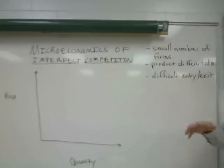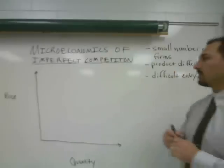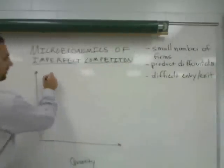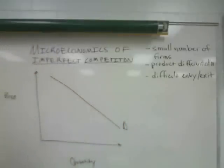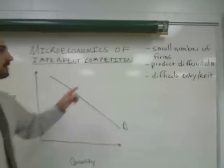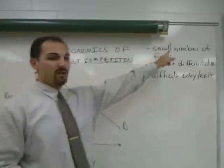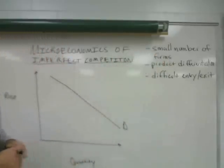For imperfectly competitive firms, we have a somewhat different situation. The firm faces a negatively sloped demand curve. This is because in imperfectly competitive market structures, there is a relatively small number of firms.